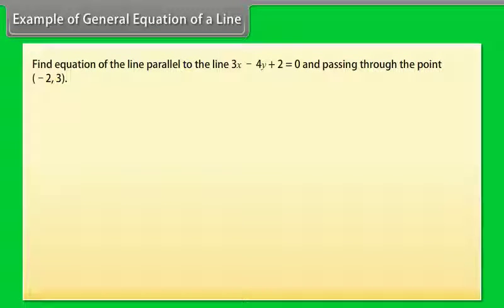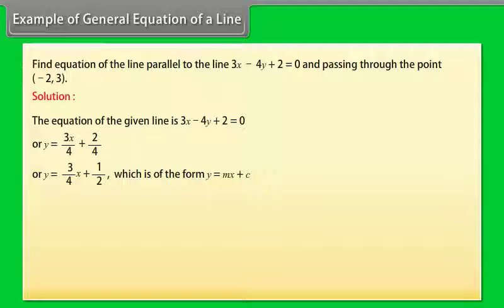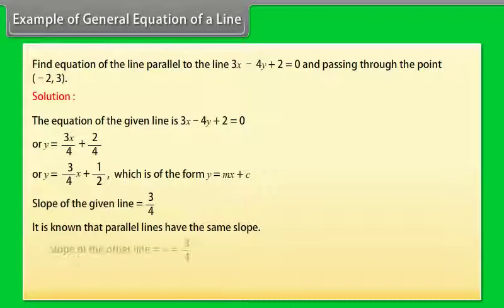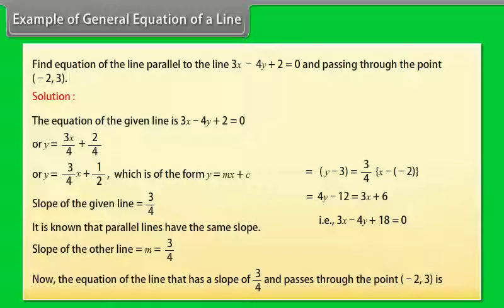Example: Find the equation of the line parallel to 3x − 4y + 2 = 0 and passing through the point (−2, 3). Solution: Rewriting gives y = (3/4)x + 1/2, so the slope is 3/4. Since parallel lines have the same slope, the other line also has slope 3/4. The equation of the line with slope 3/4 passing through (−2, 3) is 3x − 4y + 18 = 0.